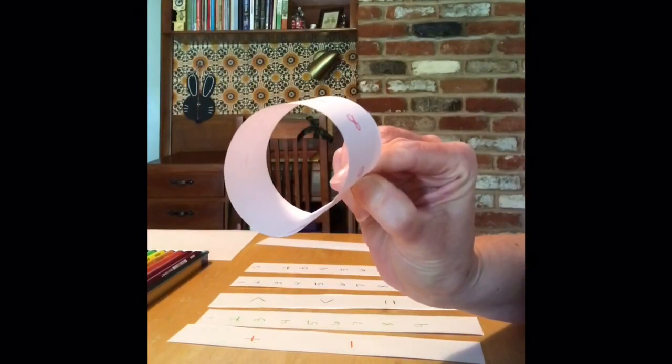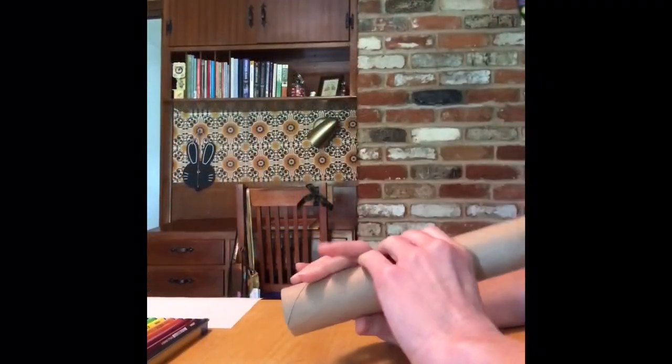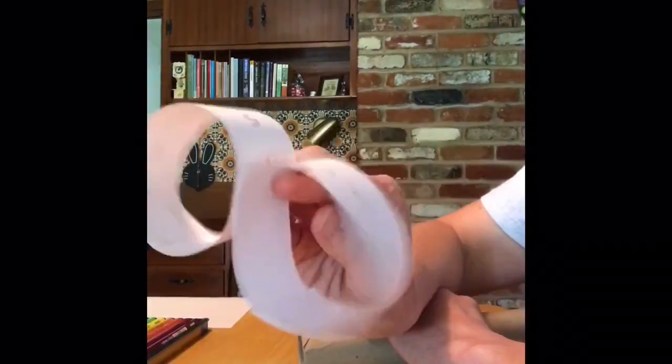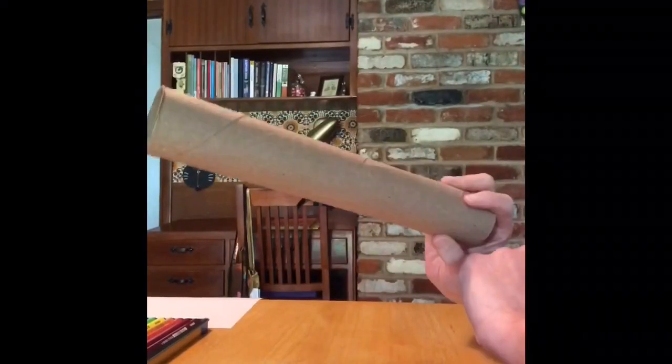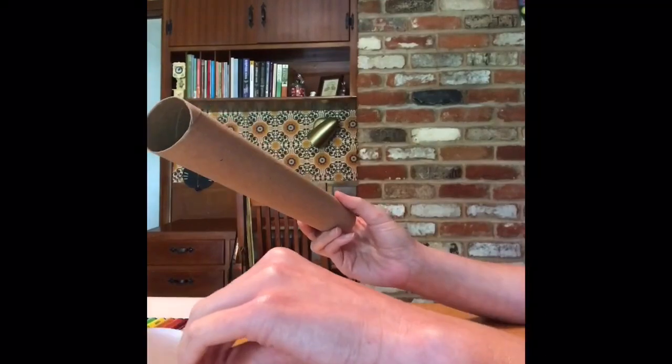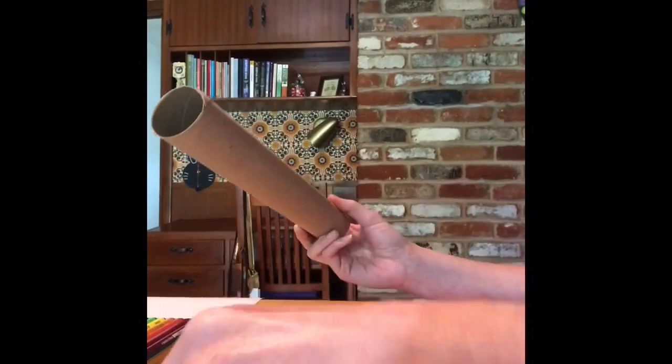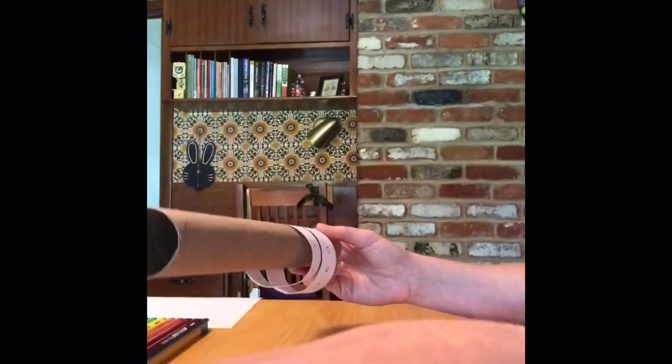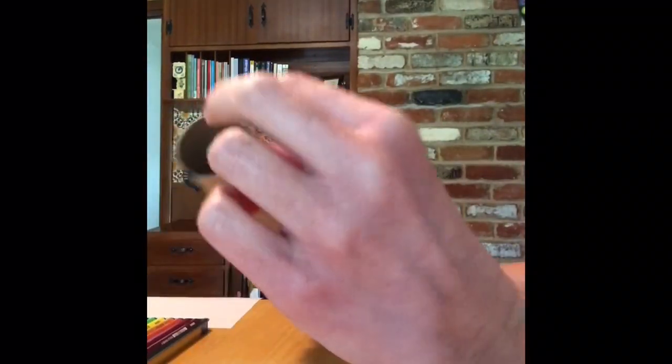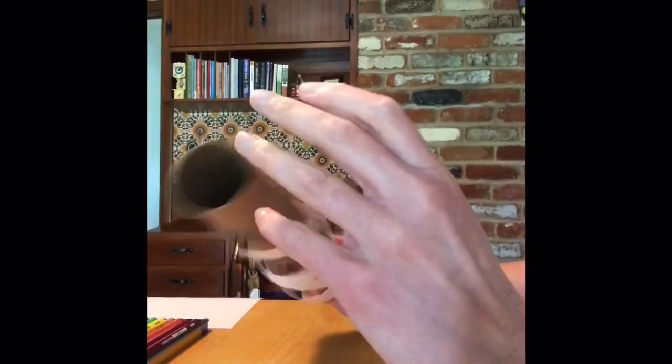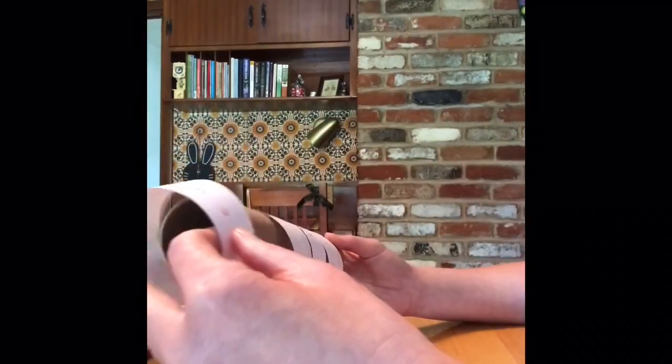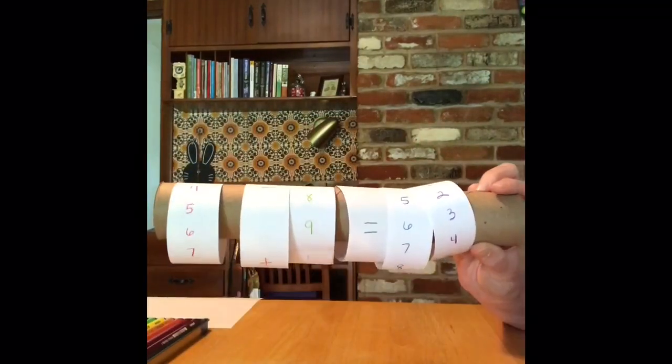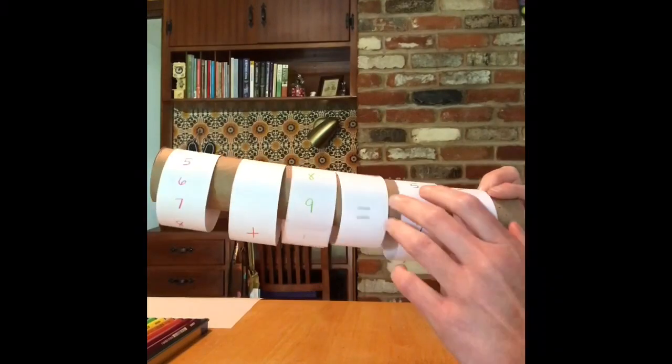Okay, now that I have all my little rings made, I'm going to slide them onto the paper towel tube. So I'm going to start with the last one, so my purple one, my blue one, then green, then light green, then orange, and last but not least we have red.